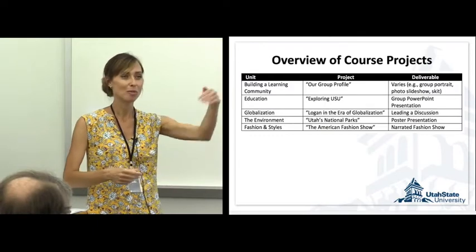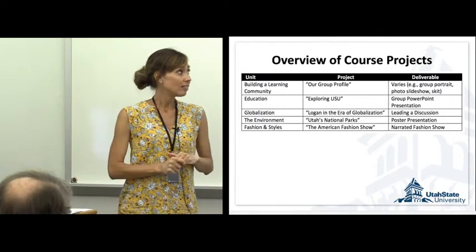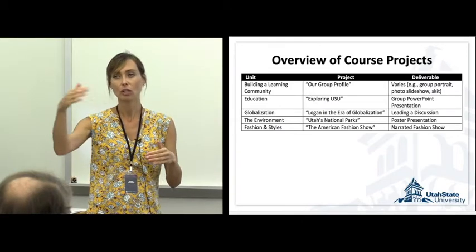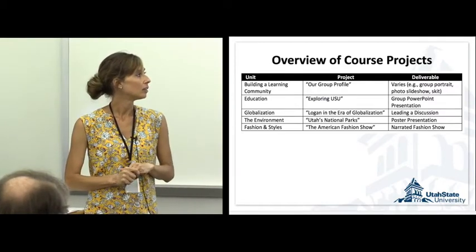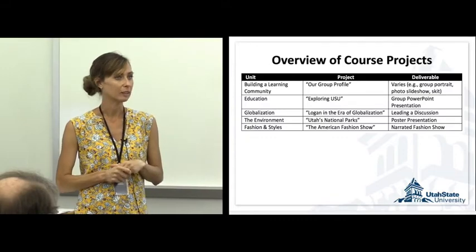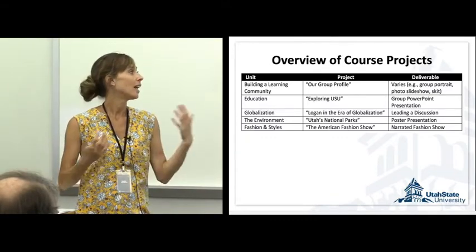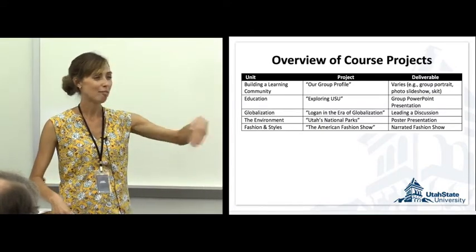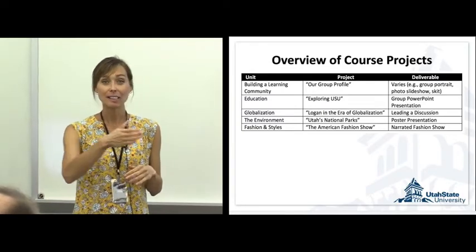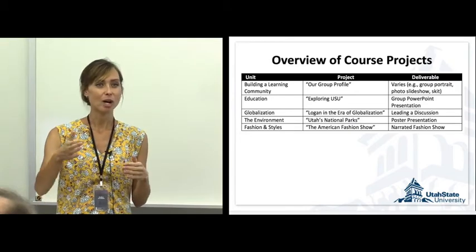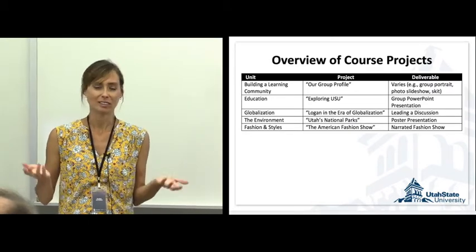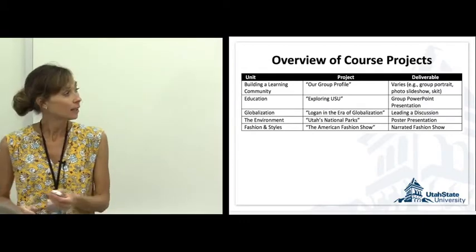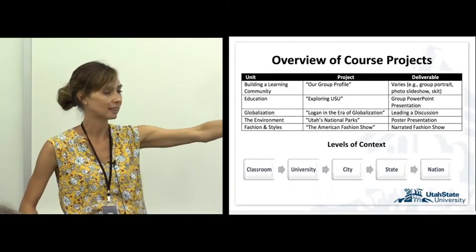At the state level, we talked about the environment and students created a group poster about Utah's national parks — researching different environmental features of each park. Finally, at the nation level, we talked about fashion and styles — what Americans wear. Students did a fashion show where they came to class and prepared different outfits for particular social events such as a party or a wedding. It was quite fun. So we moved from the classroom to the university, to the city, to the state, and then to the nation.